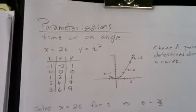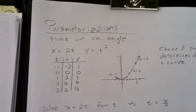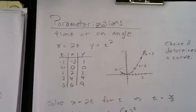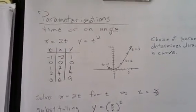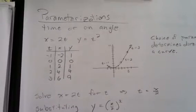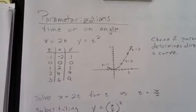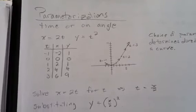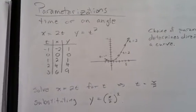A parameter is some other variable that kind of drives, for example, x and y coordinates in a rectangular coordinate system. So here we can imagine that time, t, is our parameter, and our horizontal movement, x, is driven by time.